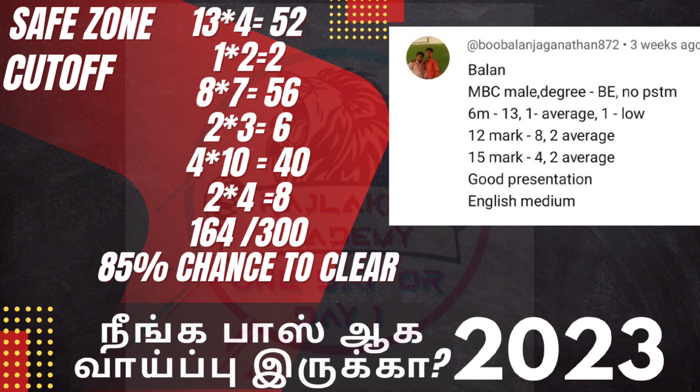So you can tell MBC mail. So you can tell the degree of 1. 6 mark is 11, 1 average is 1 low. 12 mark is 8. 15 mark is 4.